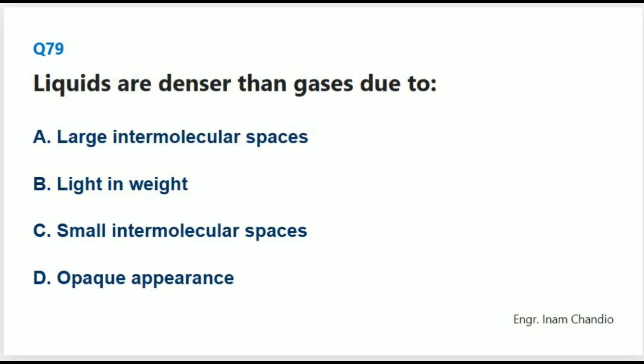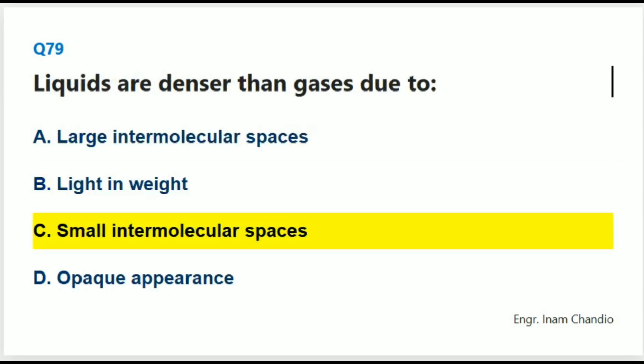Liquids are denser than gases due to: The correct answer is C. Small intermolecular spaces.